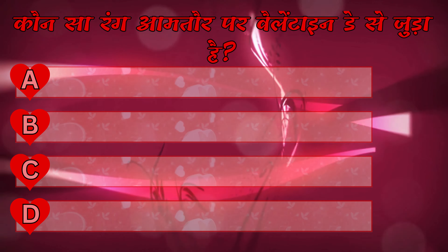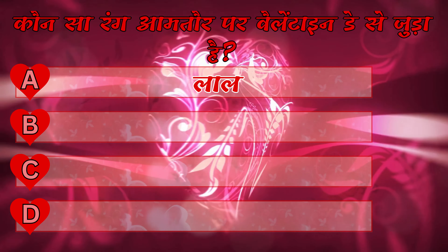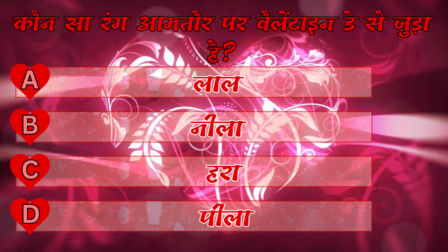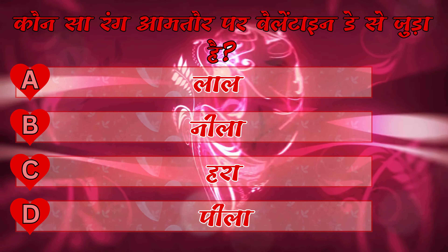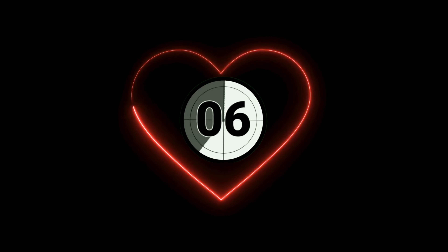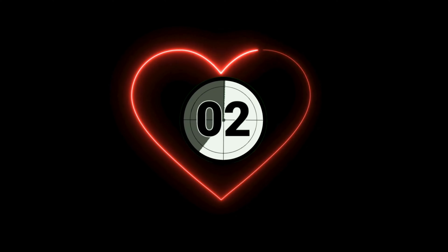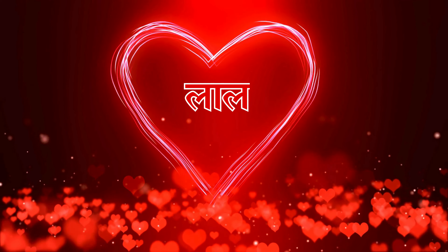कौन सा रंग आमतौर पर वेलेंटाइन डे से जुड़ा है? A. लाल, B. नीला, C. हरा, D. पीला. आपका जवाब होगा उत्तर A. लाल.